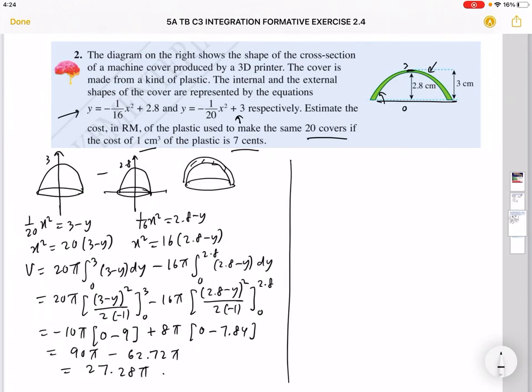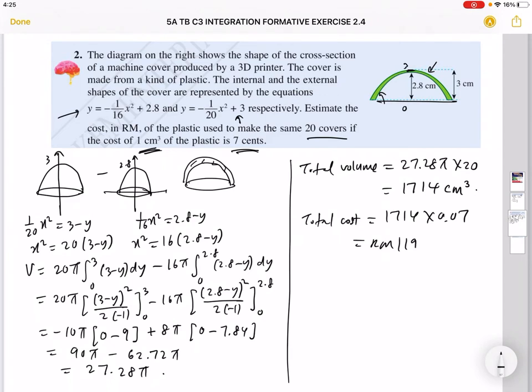You get 62.72π. When you subtract, you get 27.28π. This is the volume for one cover. Now you need volume for 20 covers, so your total volume will be 27.28π times 20. You can choose to round off straightaway. I think it's fine to use 3.142 or the calculator's π, just times 20. I think we can just round to 1714 cm³. So this is the total volume needed. Now we know one cm³ costs 7 cents, so you need 1714, so your total cost will be 1714 times 0.07. This is 7 cents, so RM 119.98.